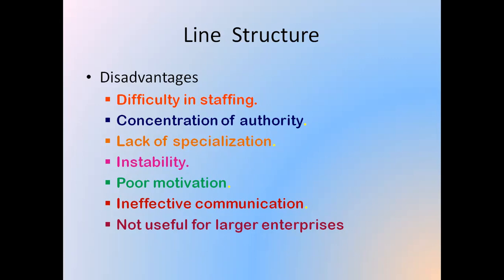Instability: the structures are not very permanent; powers of the controlling authority may be given to someone else, and the persons holding line positions may be changed. Poor motivation level: since orders and instructions are to be followed strictly and there is full discipline in this line authority, the motivation level of employees is not very high. Ineffective communication: since orders flow from above, upward communication — from lower-level employees to higher authority — is not very effective in this type of structure. Finally, the line structure is not useful for larger enterprises.